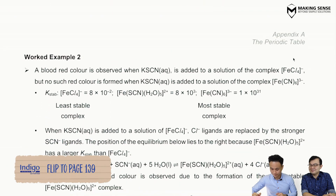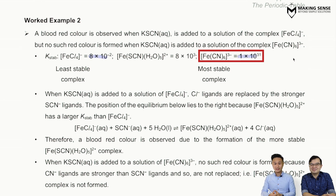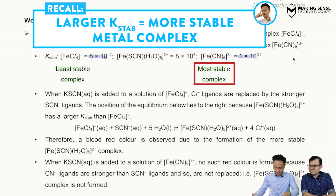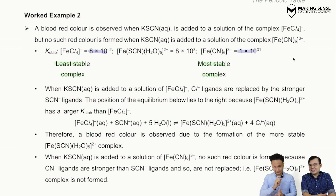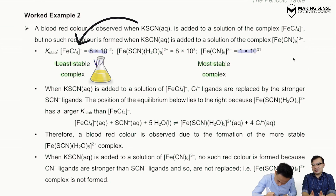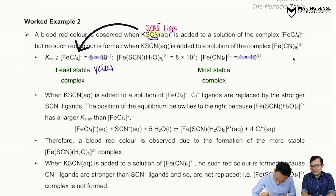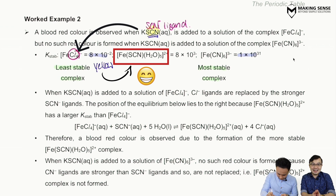In worked example two, three different complexes are compared by their Kstab values. The smallest Kstab belongs to [FeCl₄]⁻, and the largest to [Fe(CN)₆]³⁻. A very large Kstab means the complex is very stable. Starting with the yellow [FeCl₄]⁻ solution and adding SCN⁻ (thiocyanate) ions — a stronger ligand — a ligand exchange occurs: Cl⁻ ions are replaced by SCN⁻, forming a new complex with one SCN⁻ and five H₂O ligands.